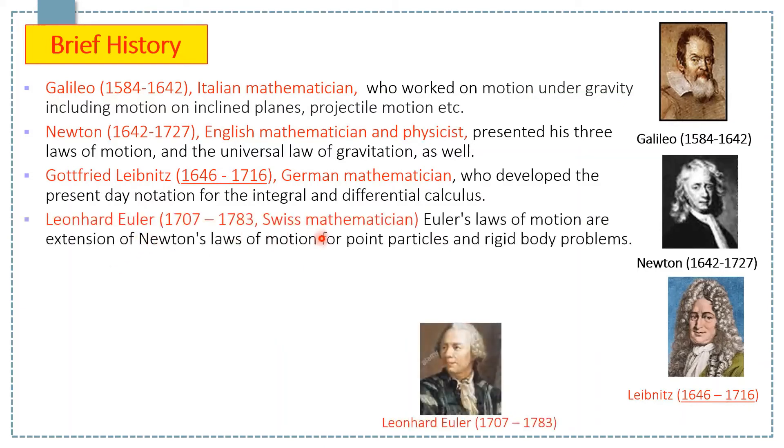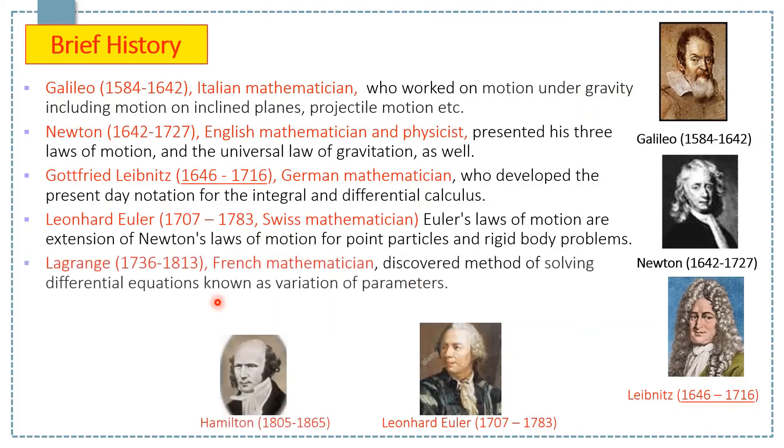Euler was next, a Swiss mathematician who presented his famous Euler's laws of motion, which are an extension of Newton's laws of motion for point particles and rigid body problems. Then Lagrange, who was a French mathematician, discovered a method of solving differential equations known as variation of parameters.